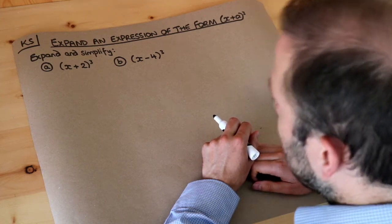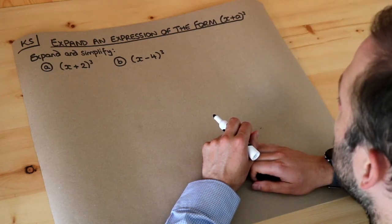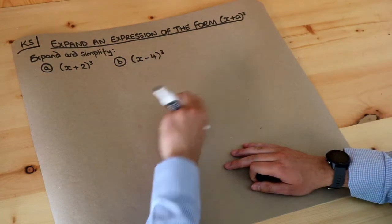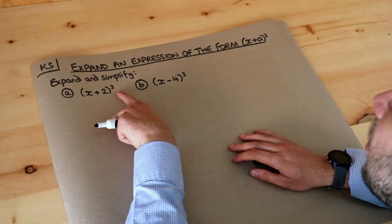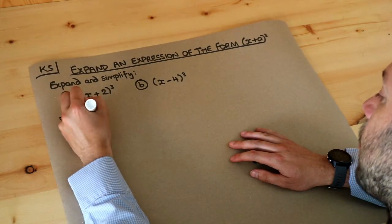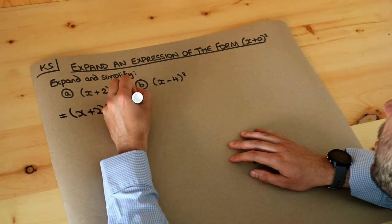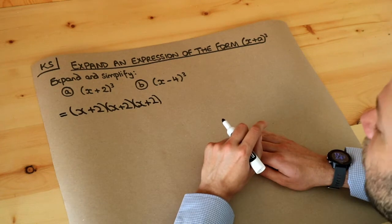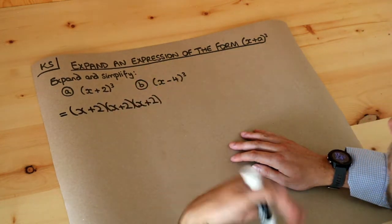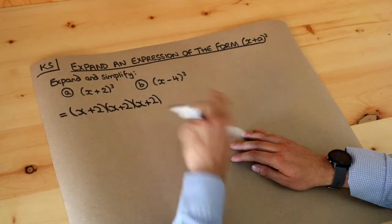Welcome to this Dr. Austin Maths key skill video on expanding an expression of the form (x + a) all cubed. So we've got these two examples here. When something is cubed, it means you multiply it by itself and by itself again. So (x + 2) cubed means x plus 2 times x plus 2 times x plus 2 — just like 4 cubed means 4 times 4 times 4.